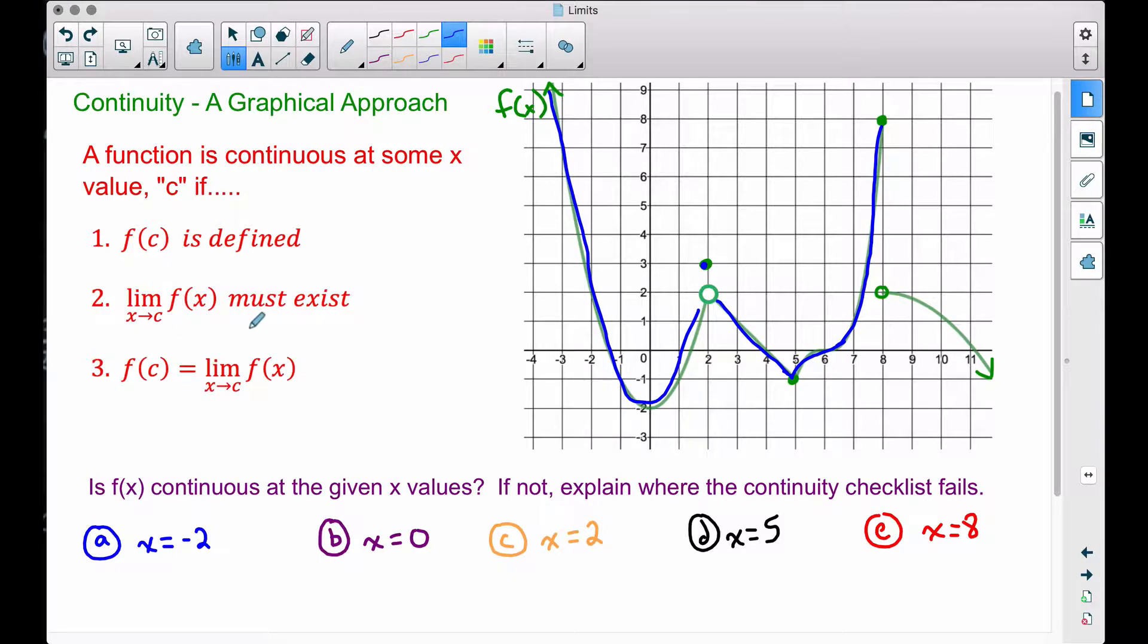So with that said, we got this continuity checklist over here. Here we technically have already identified the spots where this f(x) is not continuous. Those spots are when x is 2